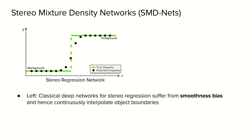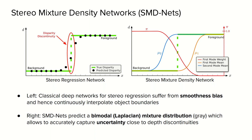For clarity, we visualize the disparity for a single image row. On the left we can see an example of a standard network that suffers from smoothness bias and continuously interpolates object boundaries. The best this model can do is predict at discrete locations the estimated disparities that are smoothly transitioning from the foreground to the background. On the right, we show our mixture density network that estimates a bimodal mixture distribution over disparity values, which can be queried at any continuous spatial location x. By doing so, the distribution can model both modes, mu1 and mu2, and we can select as the final disparity value the mode with the highest probability density, modeling a sharp edge even as the two modes continuously transition from foreground to background.